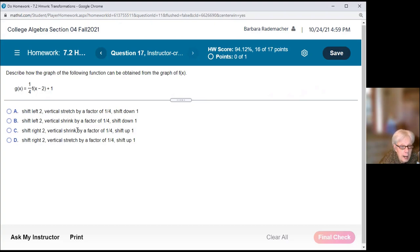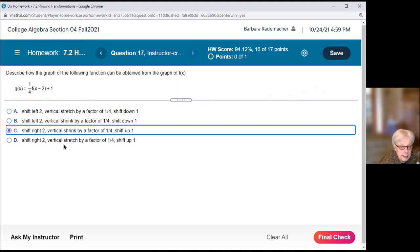And a vertical shrink, by a factor of one fourth and a shift up 1. It's C because look, D says a vertical stretch. It's not a stretch. It's a vertical shrink.